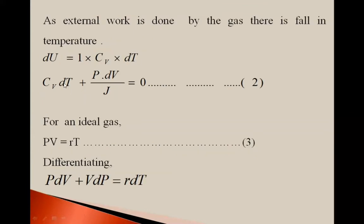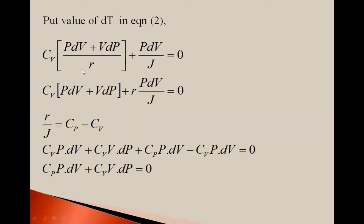Substituting the value of dT, we get: cv × (P dV + V dP) / R + P dV / J = 0. Here R / J equals cp minus cv, which is the specific heat at constant pressure minus specific heat at constant volume. Expanding: cv × P dV + cv × V dP + (cp − cv) × P dV = 0. So cp × P dV minus cv × P dV terms cancel, giving: cp × P dV + cv × V dP = 0.